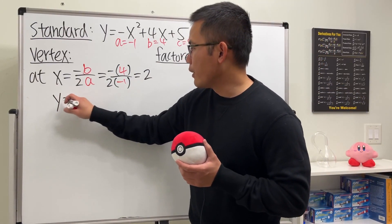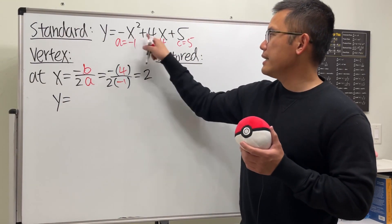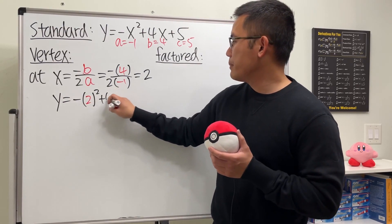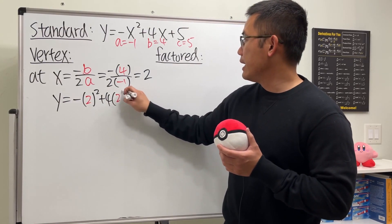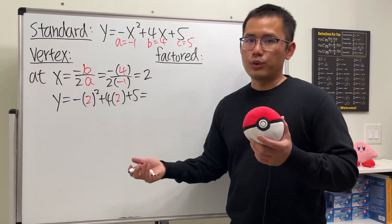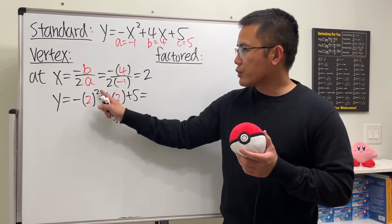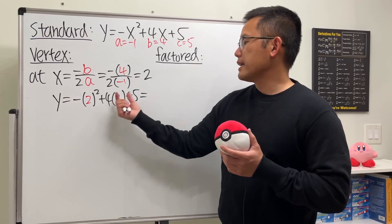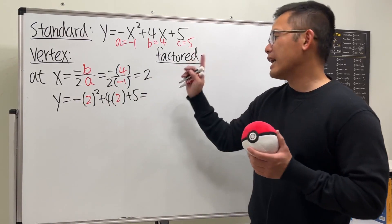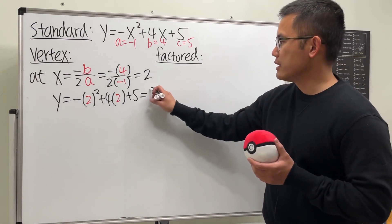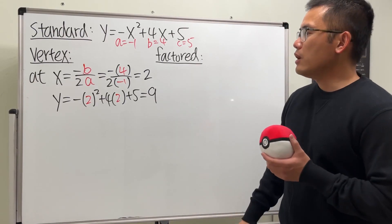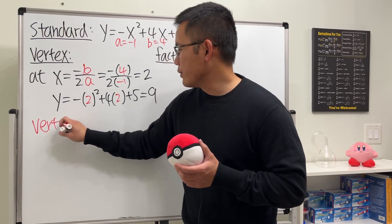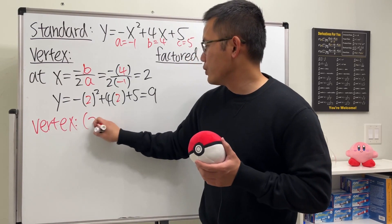Now we compute the y value by plugging x=2 back into the equation. We have negative (2 squared) plus 4 times 2 plus 5. That's 2 squared equals 4, so negative 4 plus 8 gives positive 4, then we add 5 to get 9. So the vertex is (2, 9).